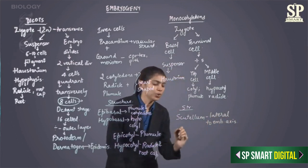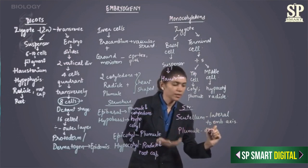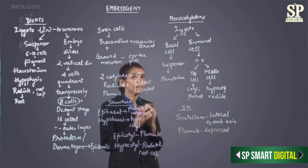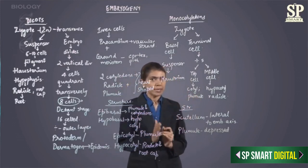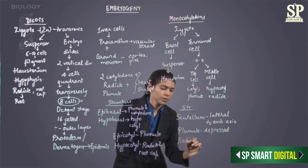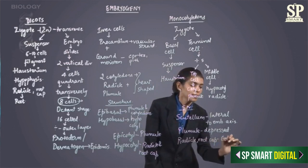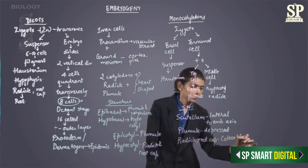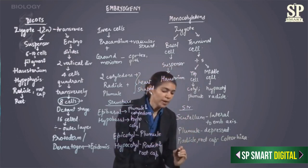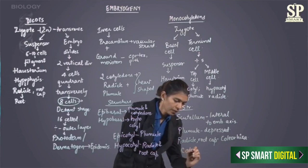The plumule comes to lie in a depression — there is a depressed area wherein the plumule is present. The epicotyl again ends in the radicle, and the radicle and the root cap are covered by a protective sheath. This sheath is called the coleorhiza. And the plumule, where the hypocotyl ends, is covered by a layer called the coleoptile.